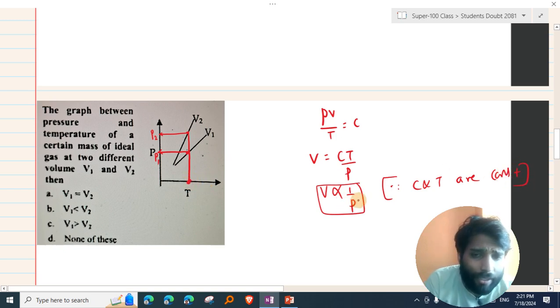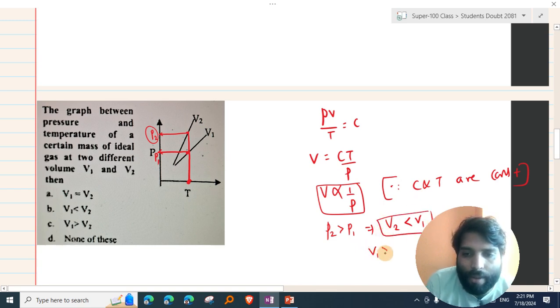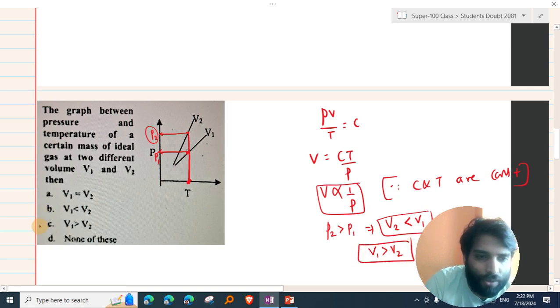If the pressure is less than P2, then V2 is greater than V1. So if V1 is less than V2, then V2 is greater than V1.